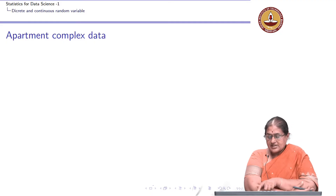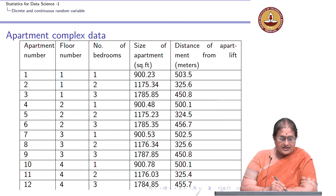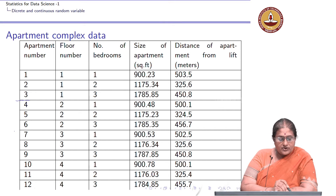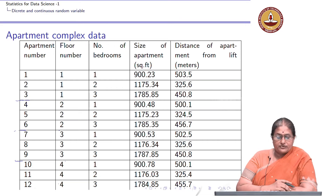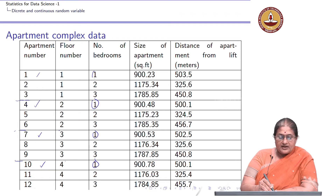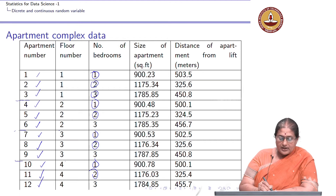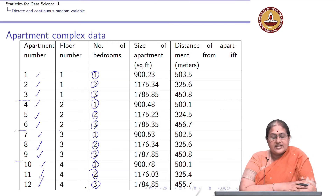Looking at the data summarized in the table, I have 12 apartments numbered 1 through 12. The first 3 apartments are on the first floor, 4 to 6 on the second floor, 7 to 9 on the third floor, and 10 to 12 on the fourth floor. Apartments 1, 4, 7, and 10 have 1 bedroom each; 2, 5, 8, and 11 have 2 bedrooms; and 3, 6, 9, and 12 have 3 bedrooms each.